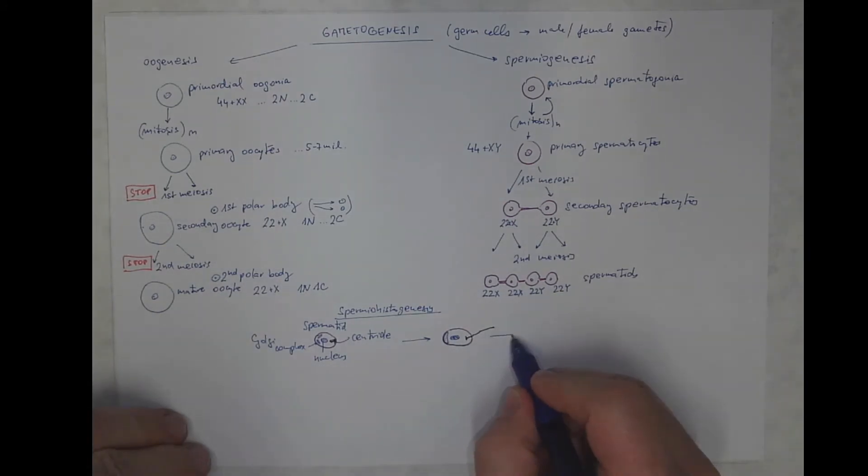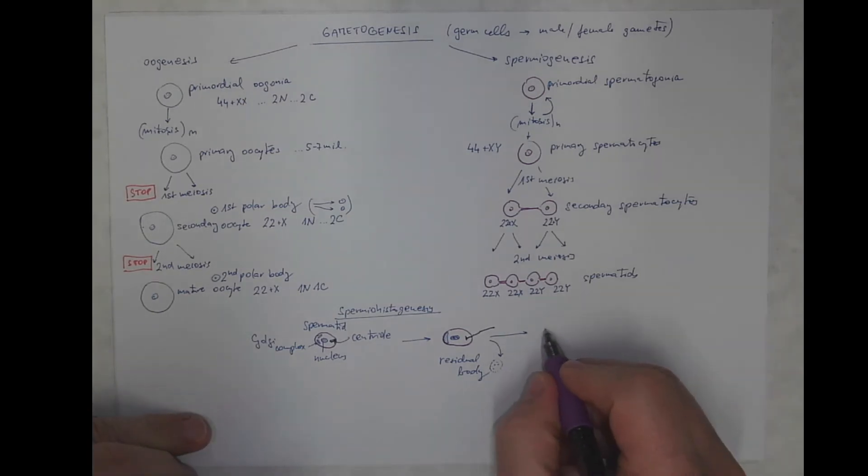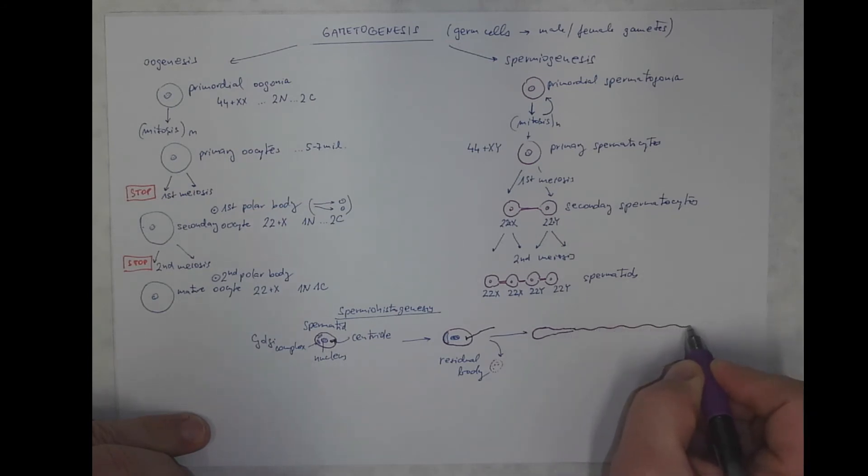And in the next step, most of the cytoplasm is lost as a so-called residual body. So, after losing most of the cytoplasm, there is already the morphology of a sperm cell, with the head, with the middle piece, and with the tail, which is the longest part.